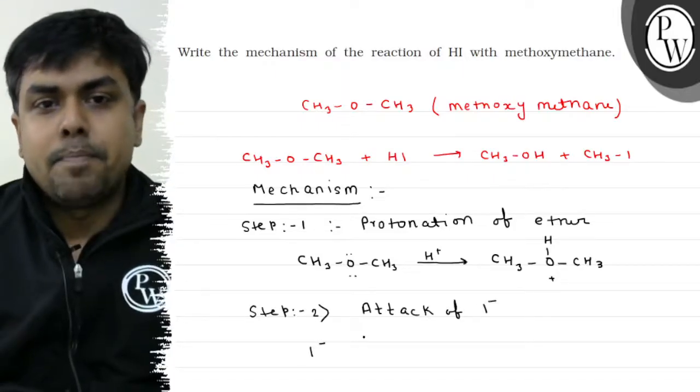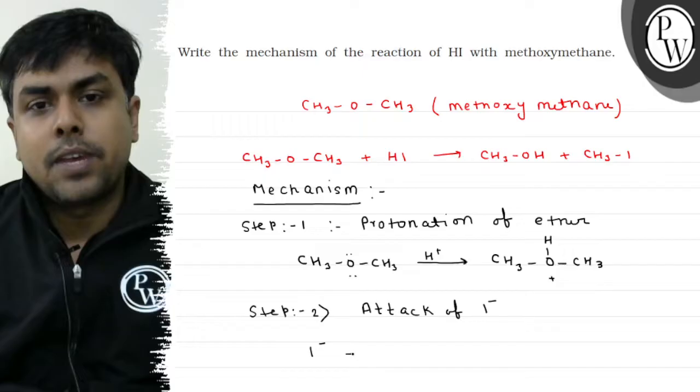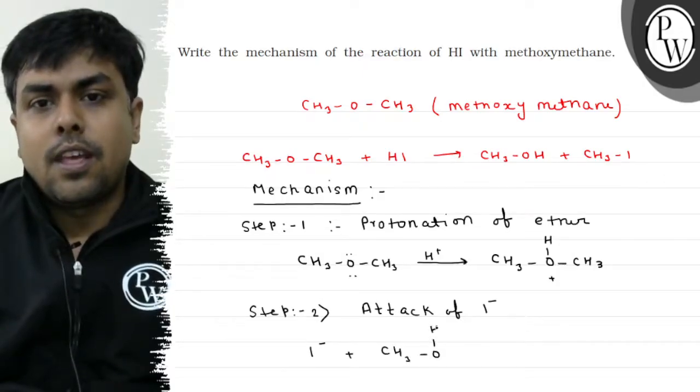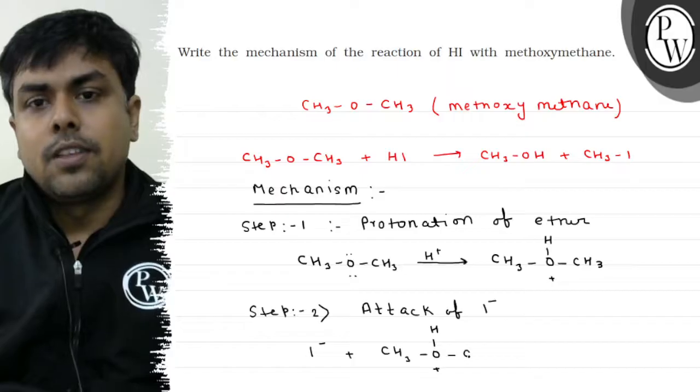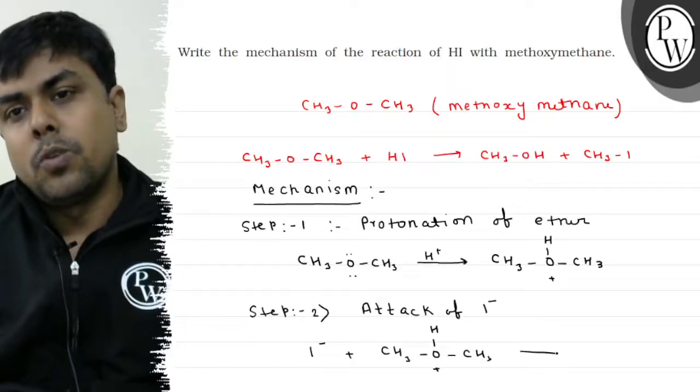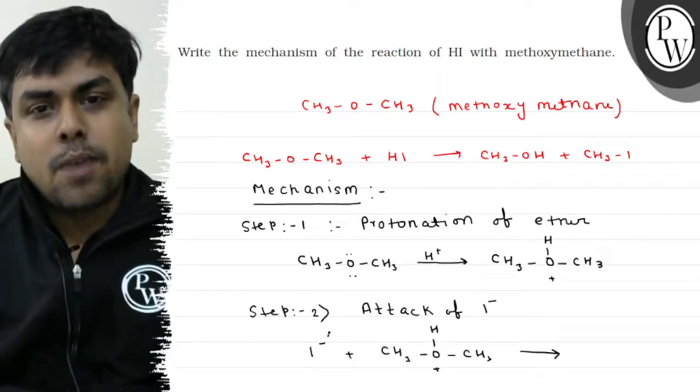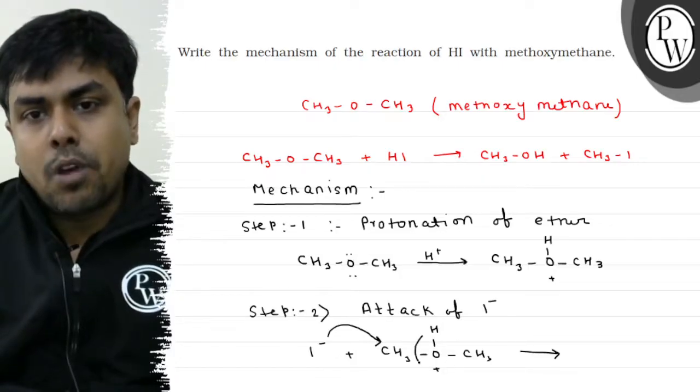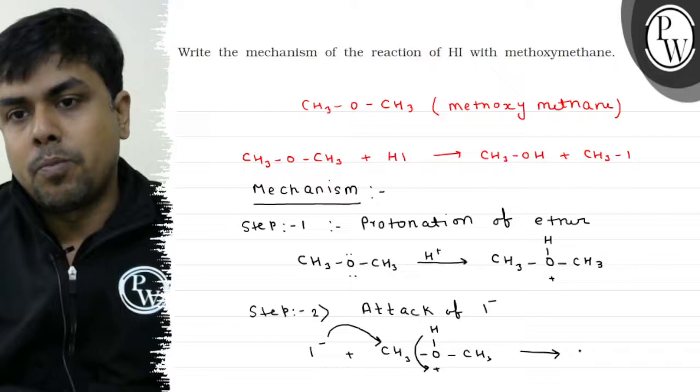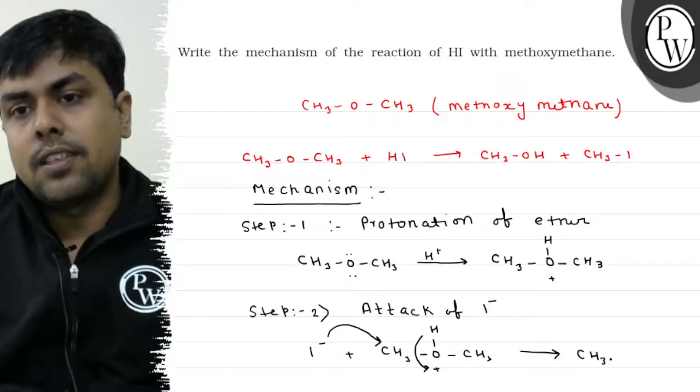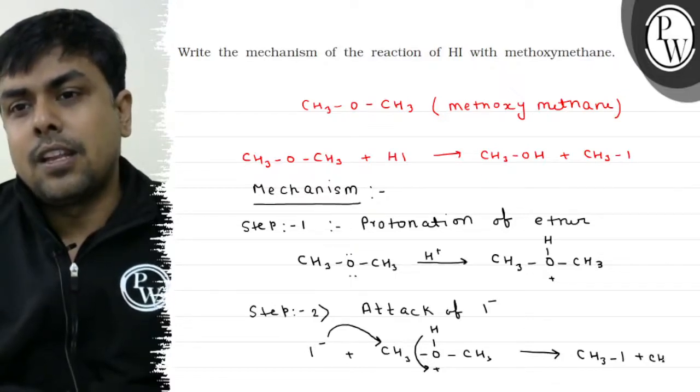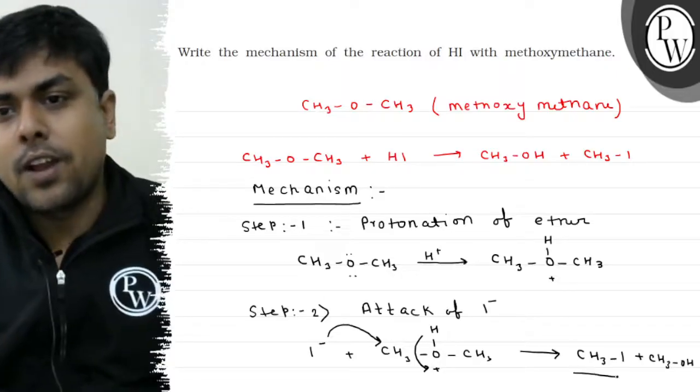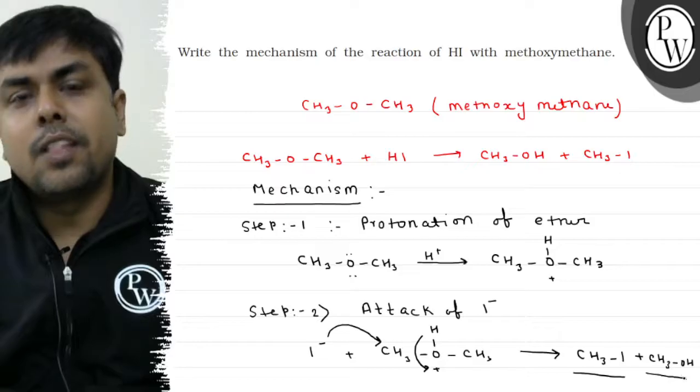I will get backside attack via SN2 mechanism. The products are CH3-I (methyl iodide) plus CH3-OH (methanol).